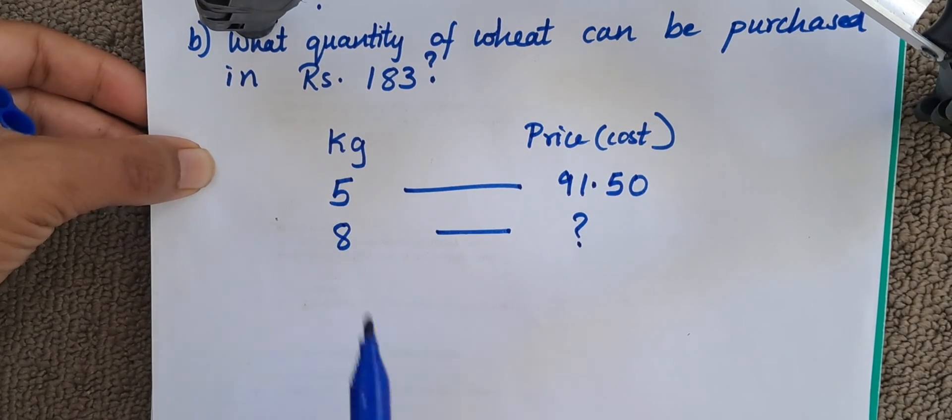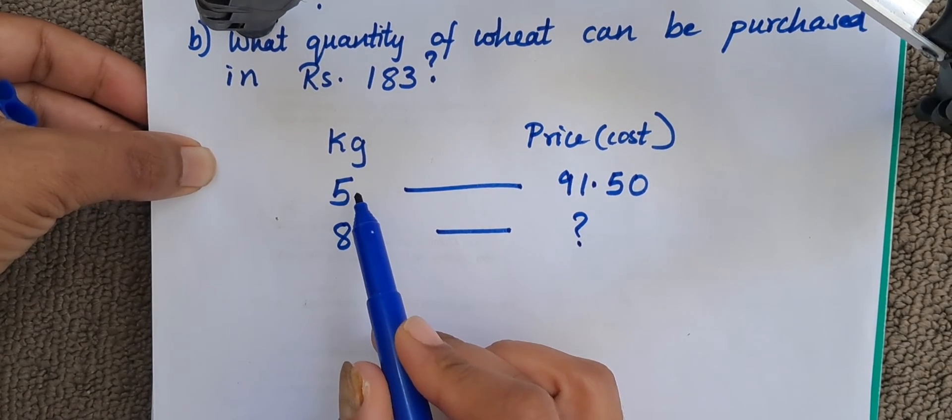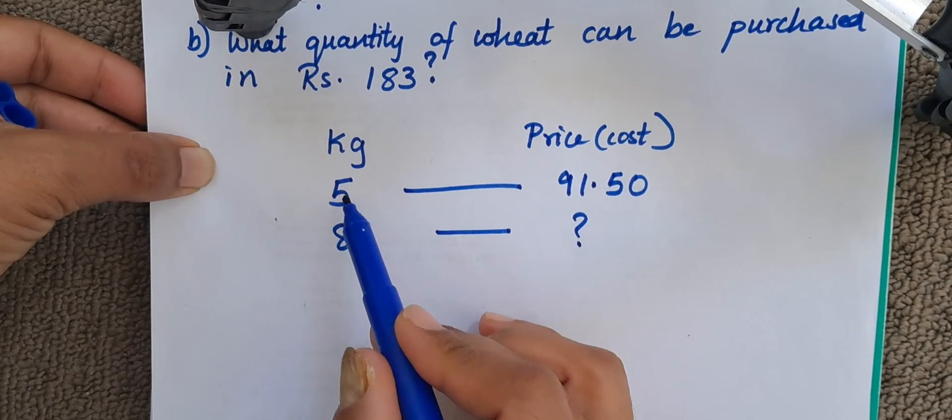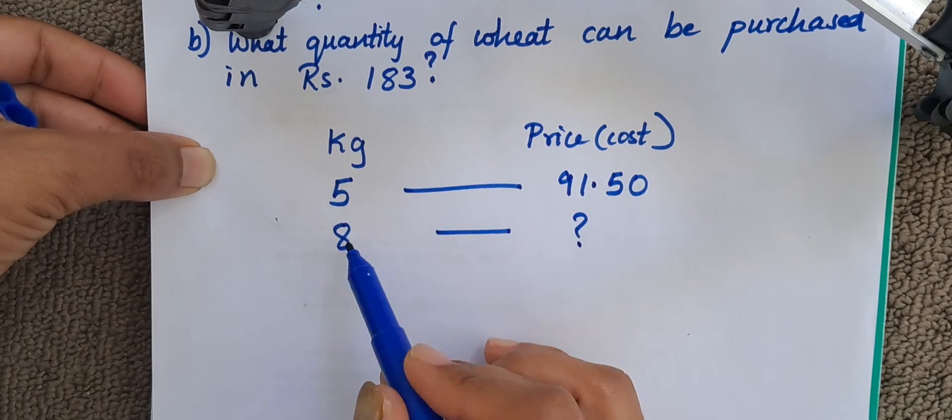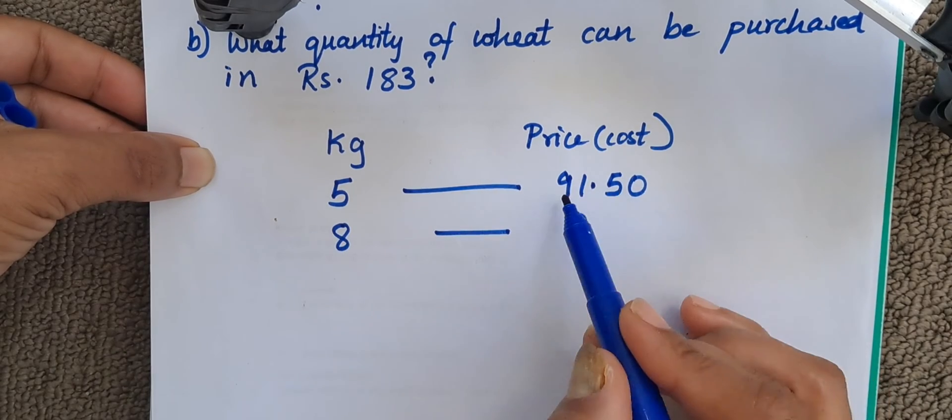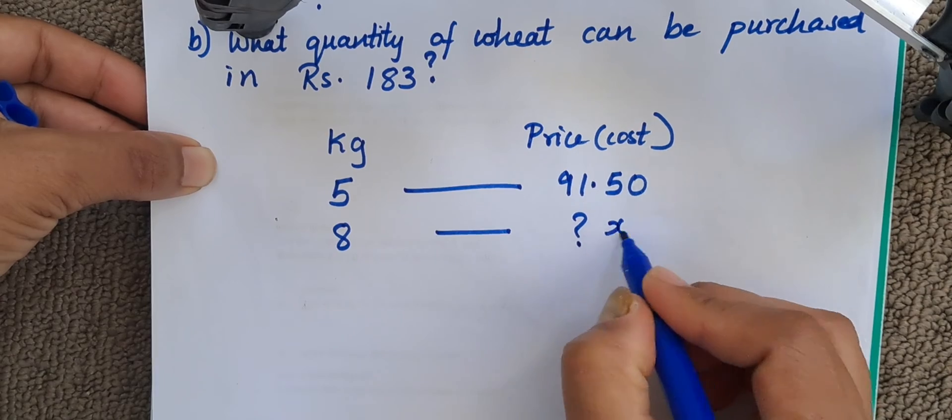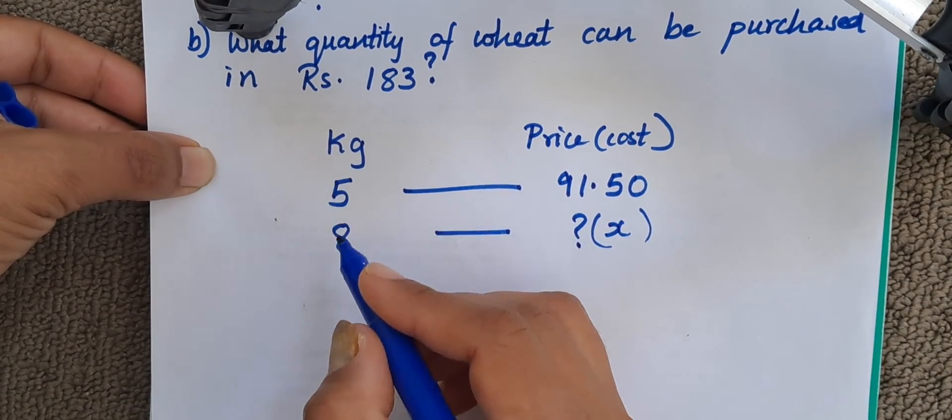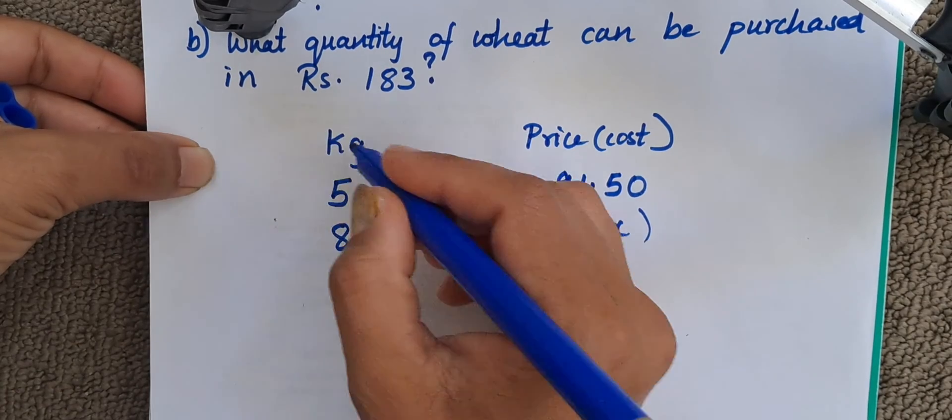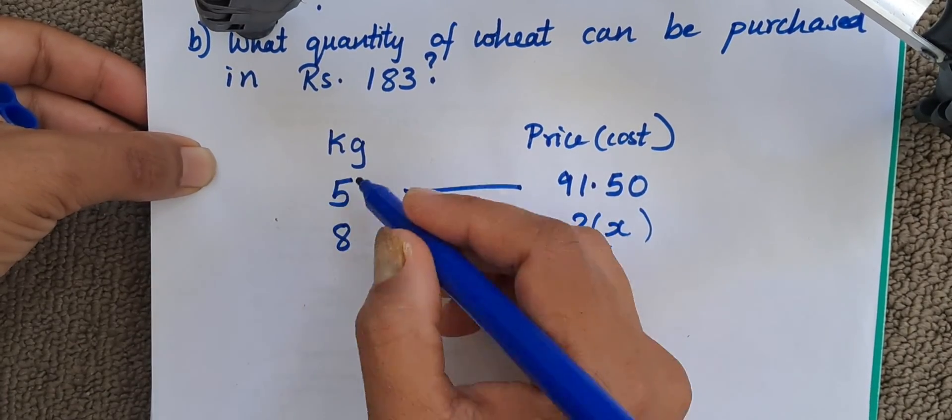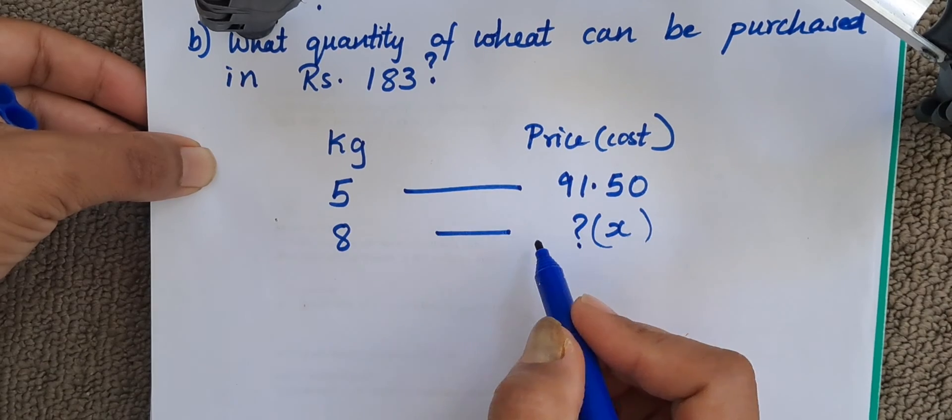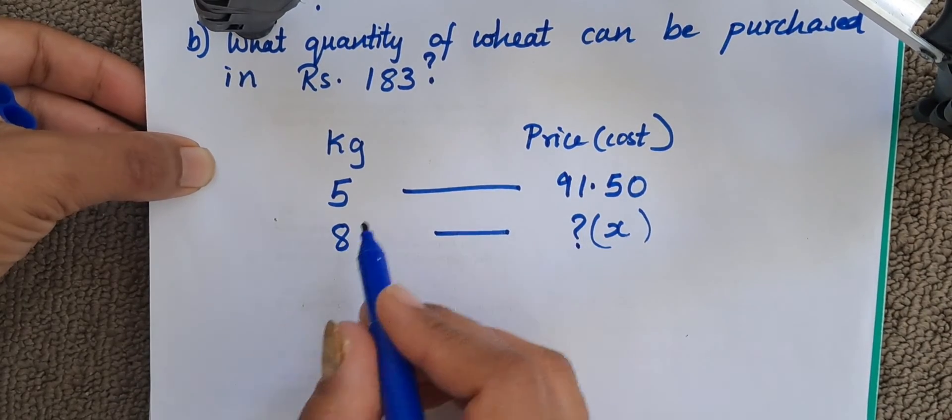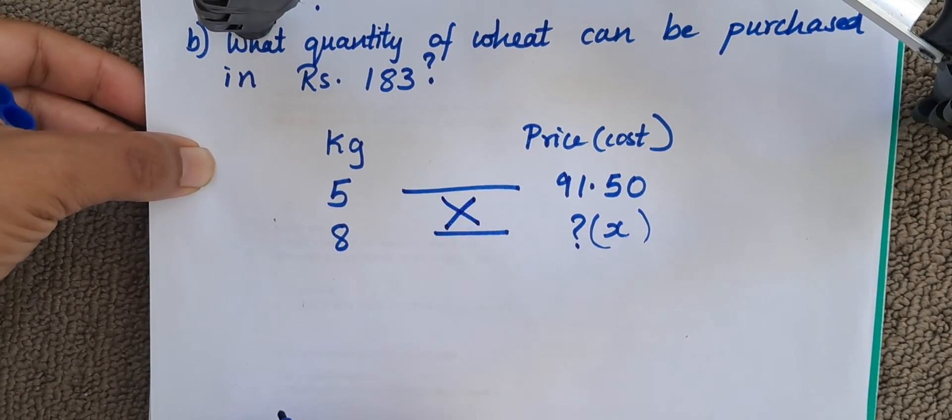You have to be always careful to write similar parameters one below the other. Like here, kg, 5 kg, 8 kg, I have written one below the other. Price, 91.5 and we do not know, so let us take it as x. You have to be careful while writing the parameters that you write them perfectly one below the other. No mixing up things here. So you write it like this and do a cross multiplication.